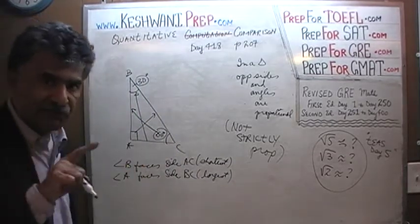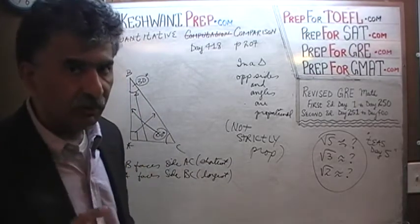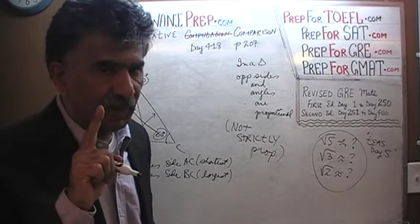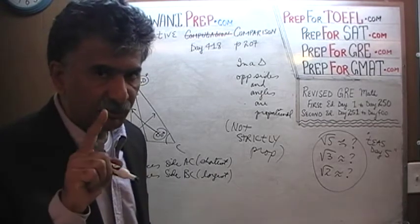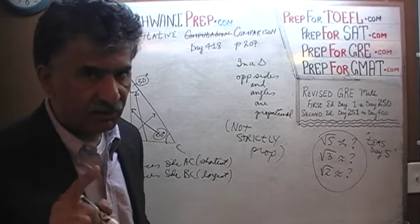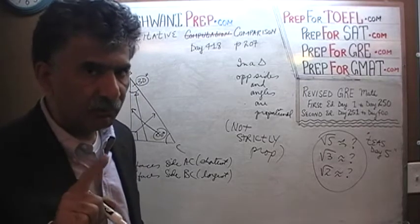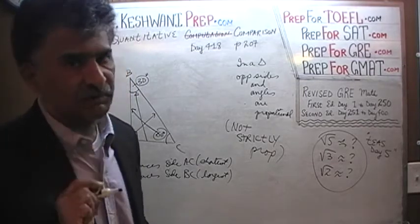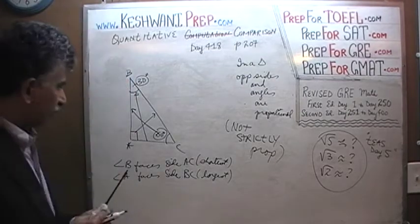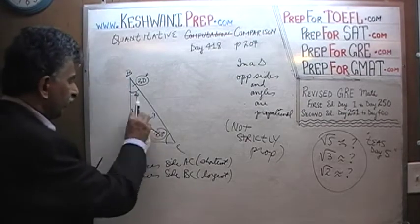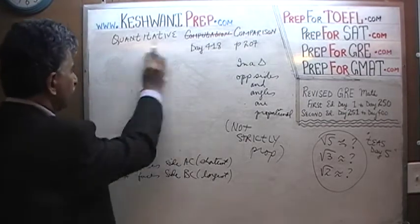They are proportional, but they are not strictly proportional. What do we mean by strictly proportional? Let me erase this and start from scratch so we have room.